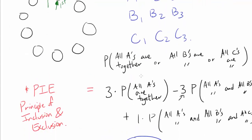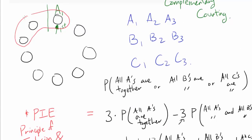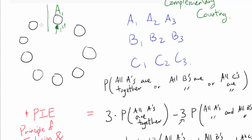Now let's count. What's the probability that all A's are together? We can place the group of A's starting at seat 1, seat 2, or seat 7 — so there are 3 different positions for the group. Within the group, A1 is fixed, so we arrange A2 and A3 in 2 ways. The remaining 6 chairs can be filled in 6 factorial ways. The total number of arrangements is 8 factorial (since A1 is fixed). So the probability is 3 × 2 × 6! divided by 8!.